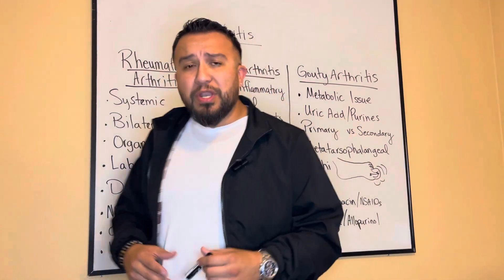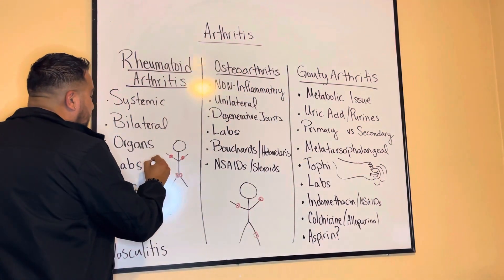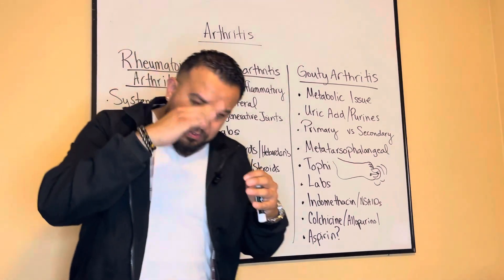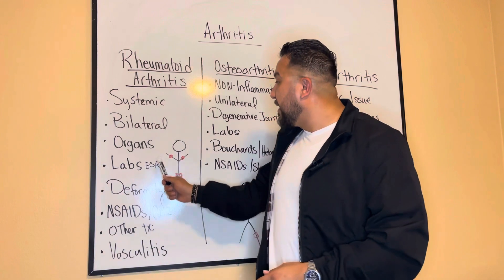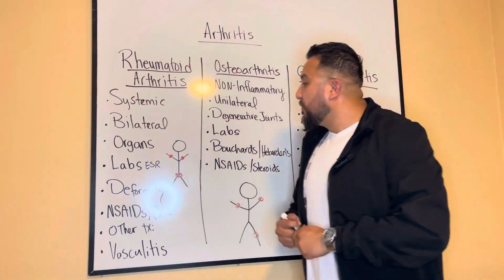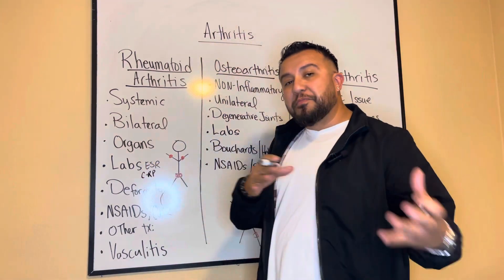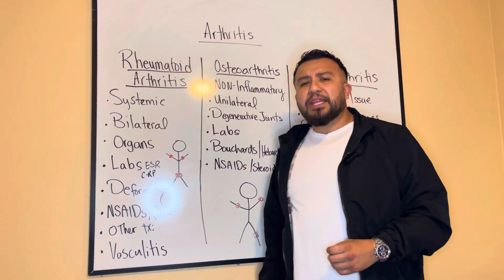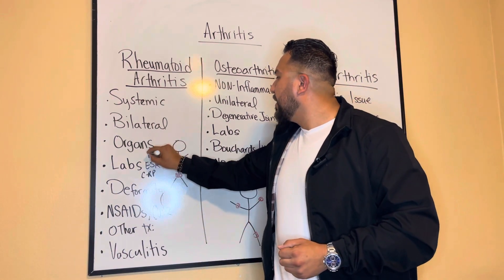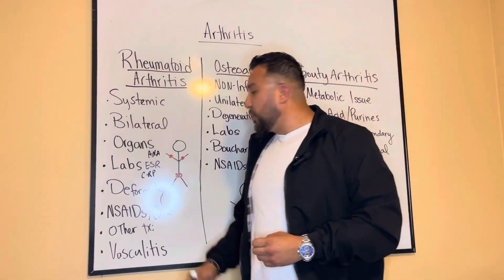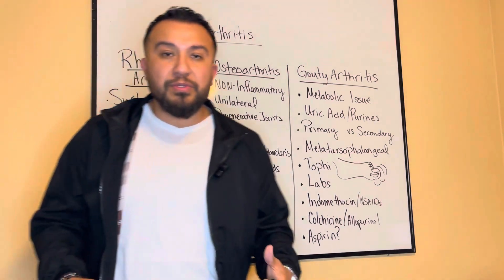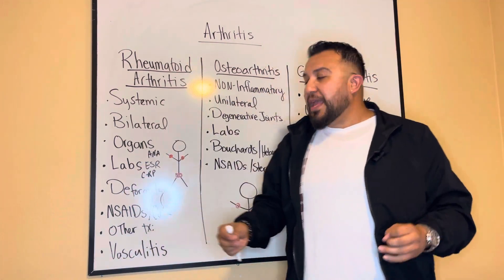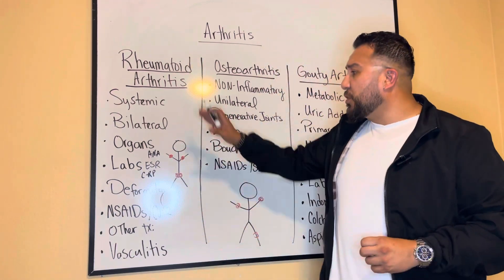When it comes to labs, you want to look at the ESR — erythrocyte sedimentation rate — which measures how fast red blood cells drop to the bottom when spun. The faster it happens, the more it indicates an inflammatory process. We also look for C-reactive protein, which is elevated with autoimmune issues. We're also going to look at the ANA, the anti-nuclear antibody. These labs are present with autoimmune issues, and we have to continuously rule out other conditions to narrow it down to rheumatoid arthritis.